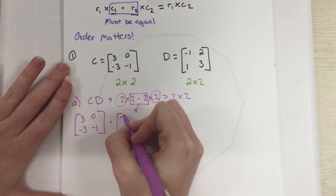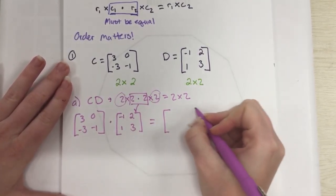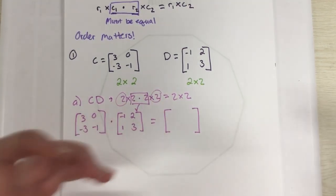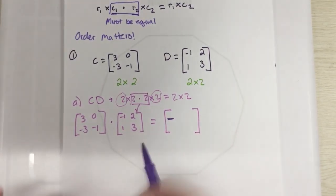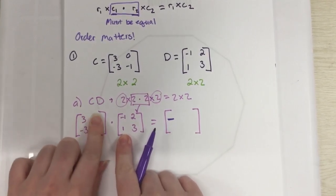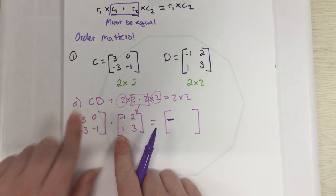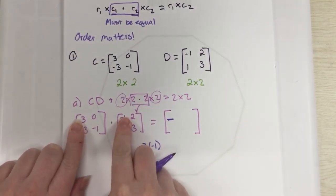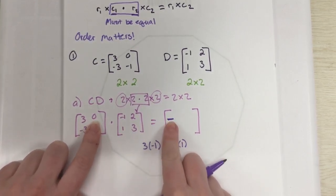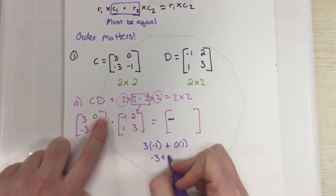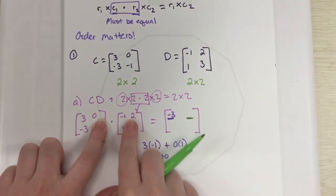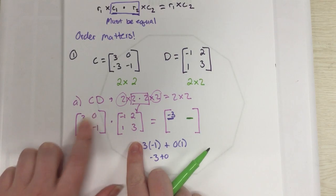So we're going to get out a 2×2. I'll rewrite this: [3, -3; 0, -1] times [-1, 1; 2, 3] equals a 2×2. For position row one, column one, I multiply row one of the first matrix by column one of the second: 3×(-1) + 0×1 = -3 + 0 = -3. For position row one, column two, I multiply row one by column two: 3×2 + 0×3 = 6 + 0 = 6.